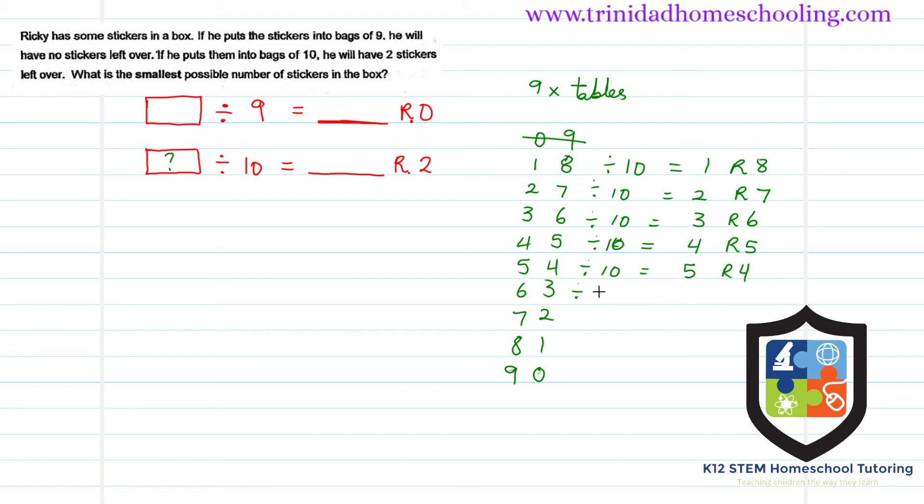Let's continue. If I divide sixty-three by ten, we have six tens and a remainder of three. If I divide seventy-two by ten, I get seven tens and a remainder of two. Now look at this - we have our answer!